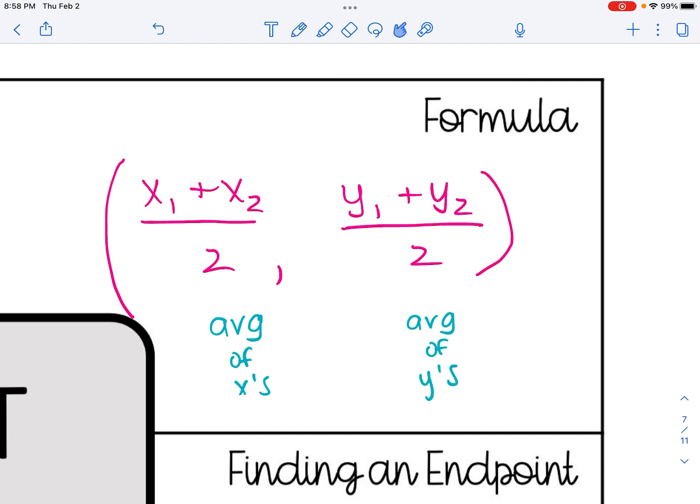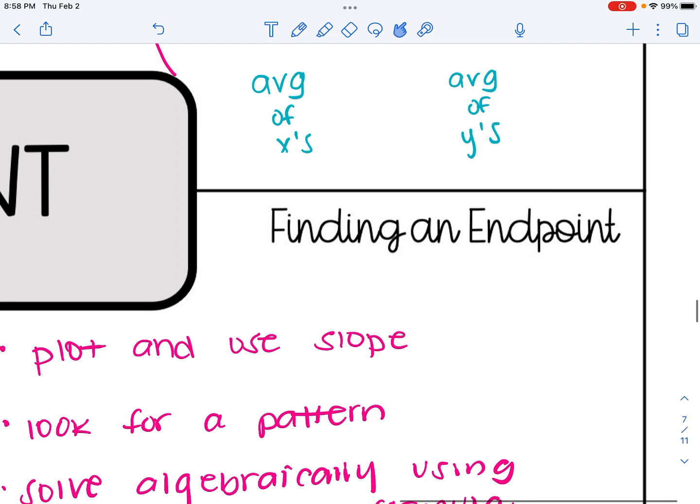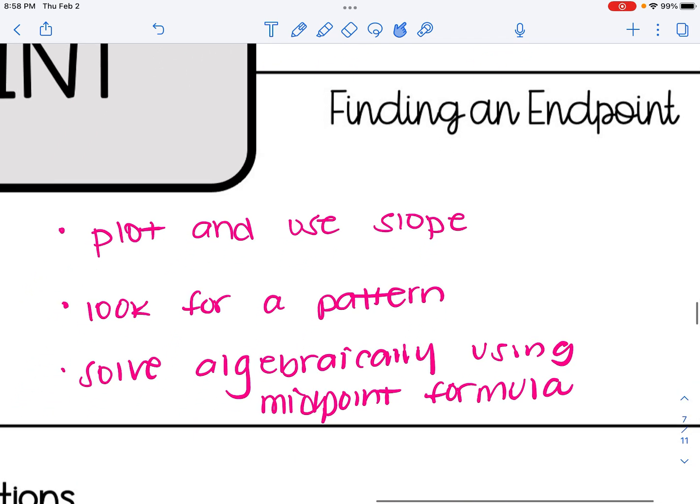You'll see on some of the problems in this video that we are actually given the midpoint and we're asked to find another endpoint. And there are a couple of ways you could do this. We could plot if you have graph paper and use slope to help you find the other endpoint. You could list out the coordinates and try to find a pattern, or you could solve algebraically using the midpoint formula. So I will do a problem using each of those methods.